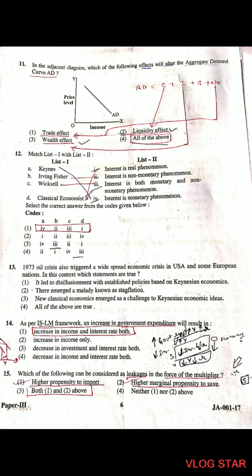Question 11: Which effects will alter the aggregate demand curve AD? The formula of AD is C + I + G + NX — consumption plus investment plus government expenditure plus net exports. Liquidity effect represents consumption, wealth effect represents investment, and trade effect represents net exports. Therefore trade effect, wealth effect, and liquidity effect are all correct — all of the above are right.